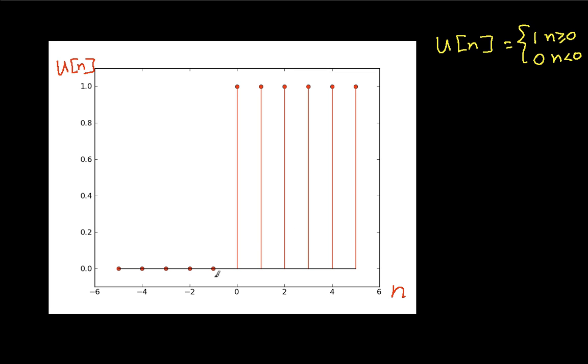So for values of n out here, u of n is 1, and as n goes on to infinity, it will stay 1. For values of n that are less than 0, u of n is 0, and it will be 0 for n out to minus infinity. The unit step function is very handy. Quite often you want to characterize a system, and one way to do that is to see how it responds to a unit step function.